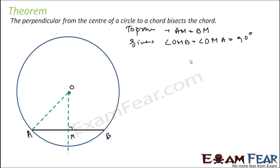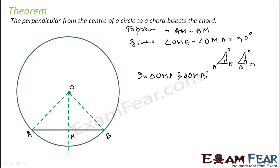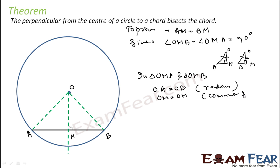To prove this, we join OA and OB, because we want to prove that the two triangles OMA and OMB are congruent. In triangles OMA and OMB: OA is equal to OB as both are radii, OM is equal to OM as it is a common side, and angle AMO is equal to angle BMO — both equal to 90 degrees as given. So using RHS, these two triangles are congruent.